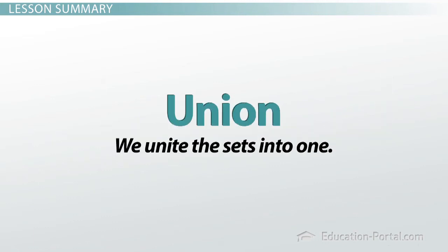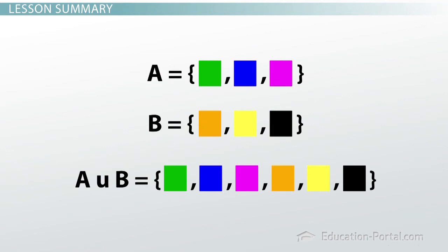Union is when we unite things. We're going to put things together. So A union B means we're going to put everything in A together with everything in B.